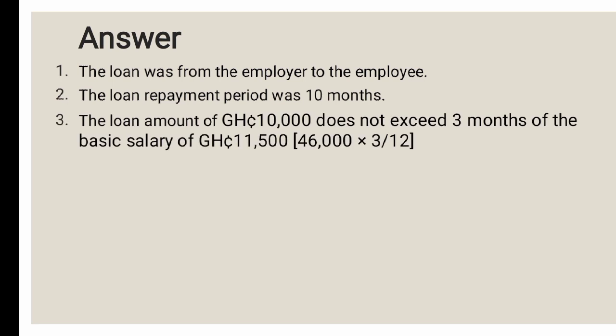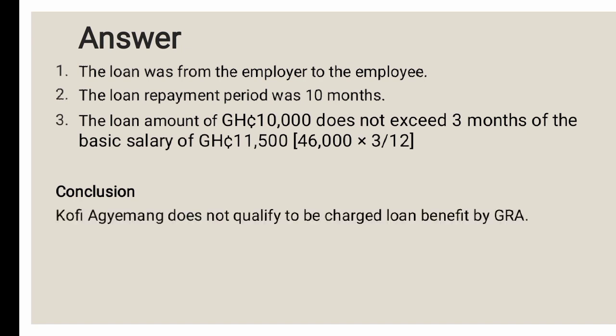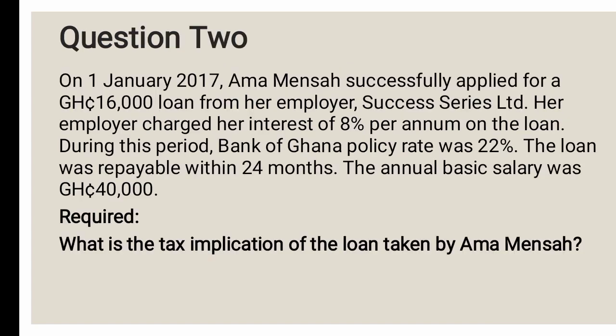The loan amount of GHS 10,000 does not exceed three months of the basic salary. Three months of GHS 46,000 is GHS 46,000 × 3/12 = GHS 11,500. The loan of GHS 10,000 does not exceed GHS 11,500. Conclusion: Kofi Ajeman does not qualify to be charged loan benefit by GRA, because not all the conditions are present.